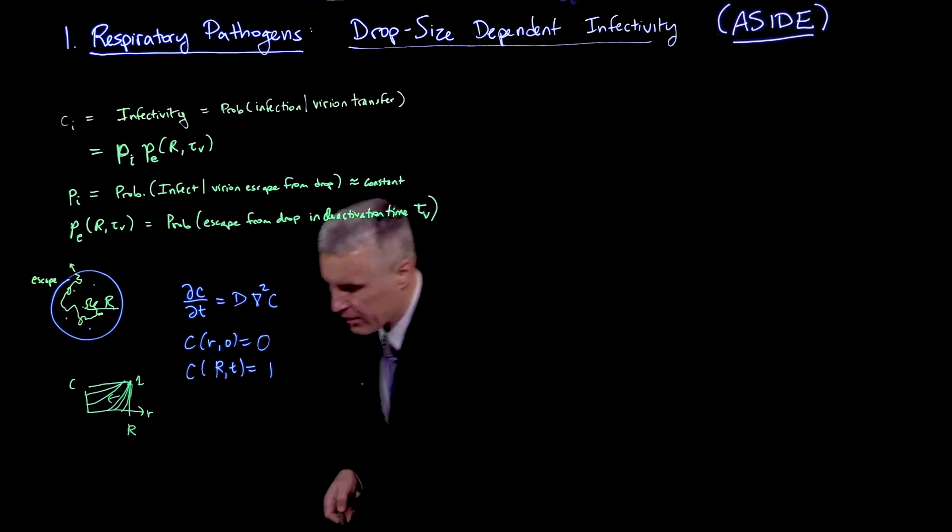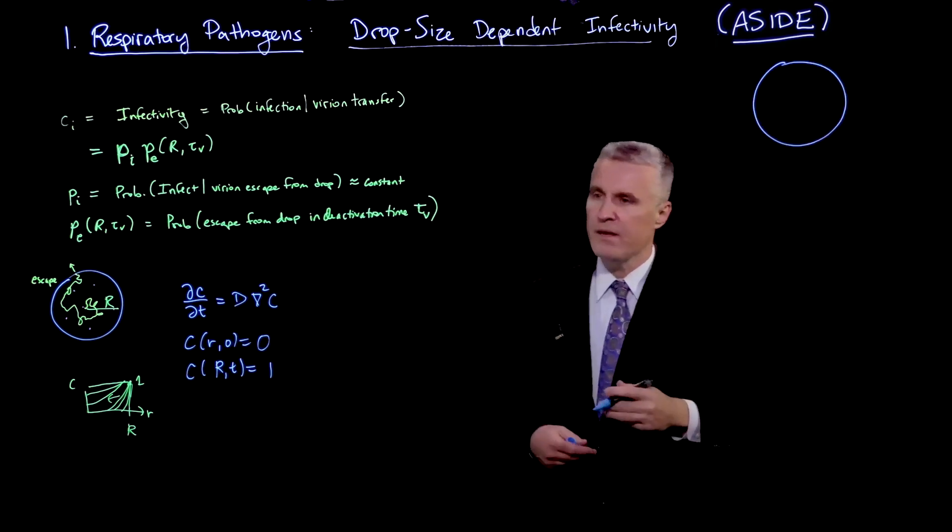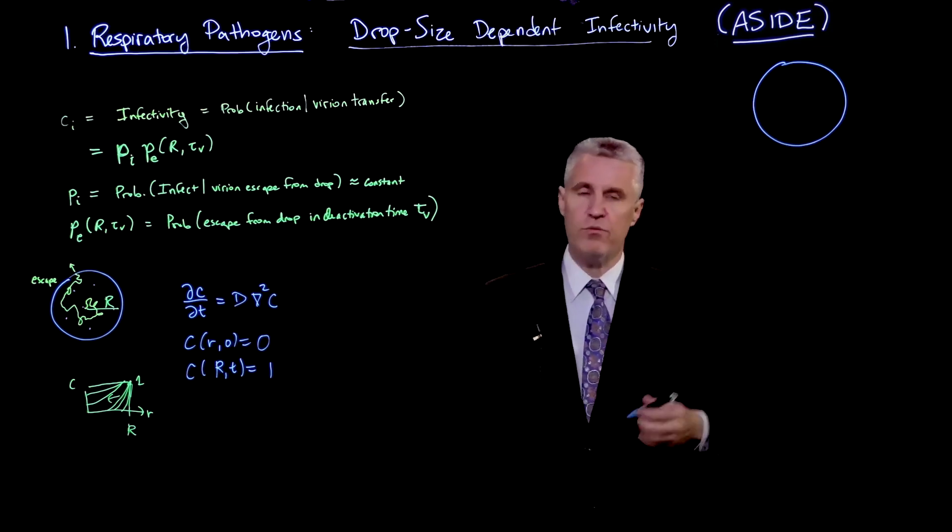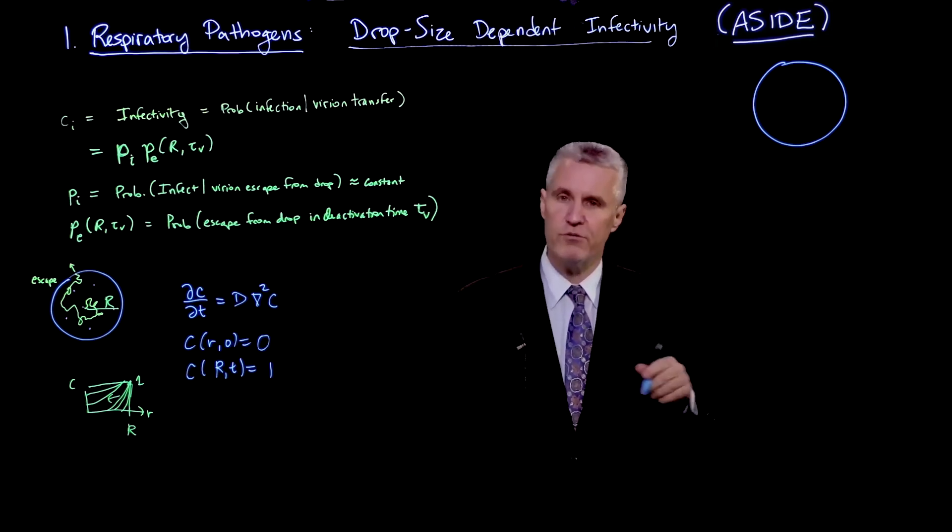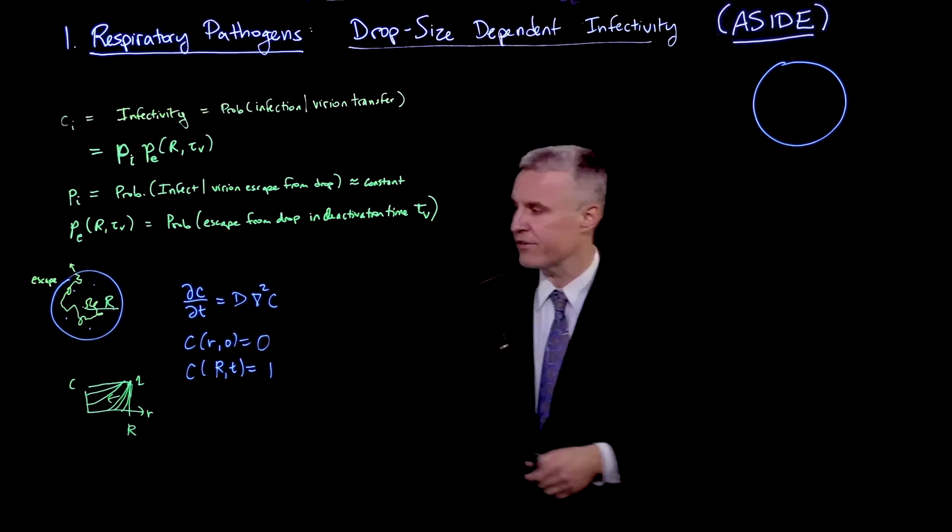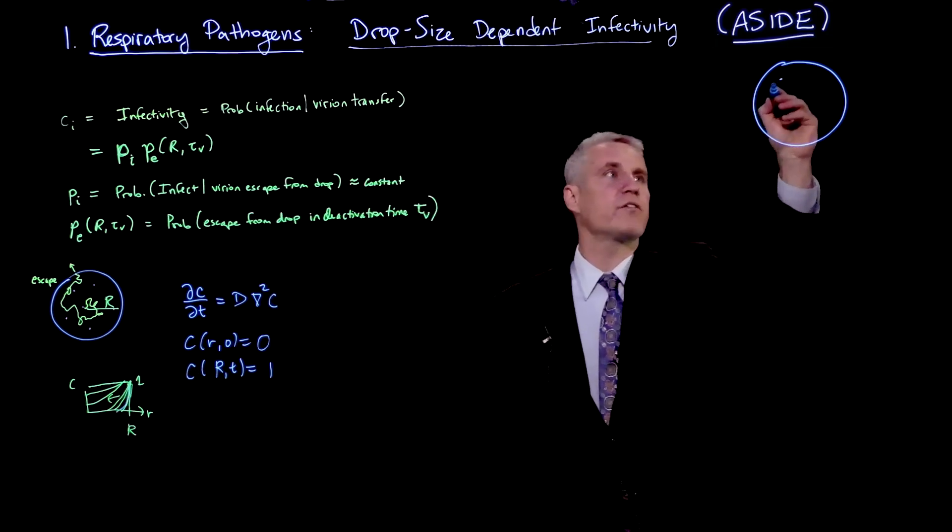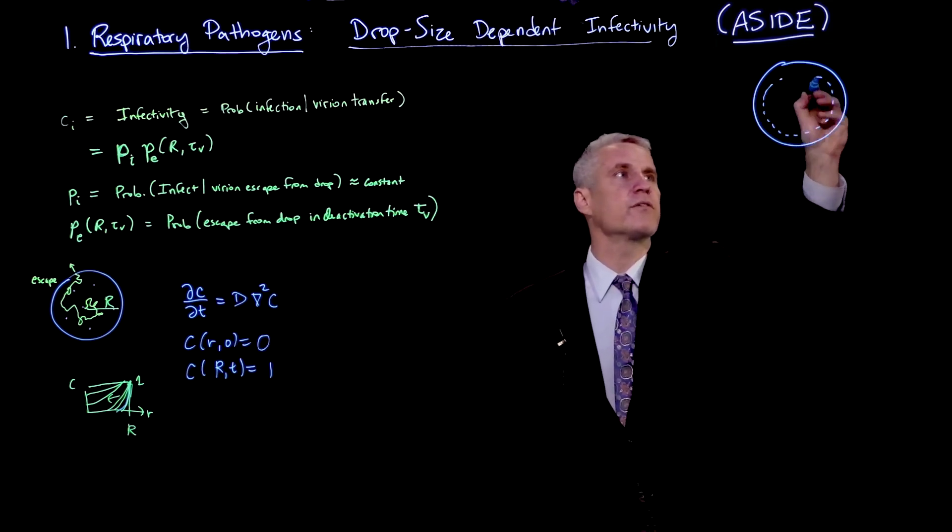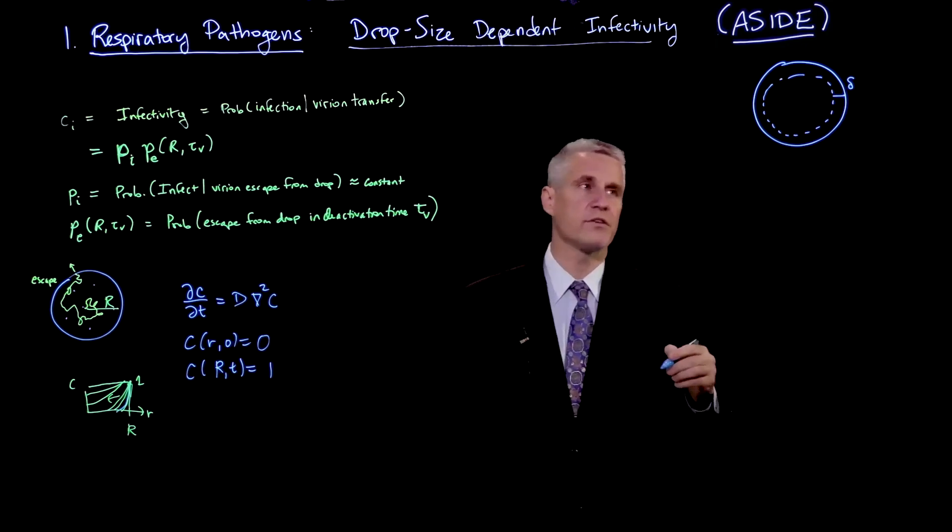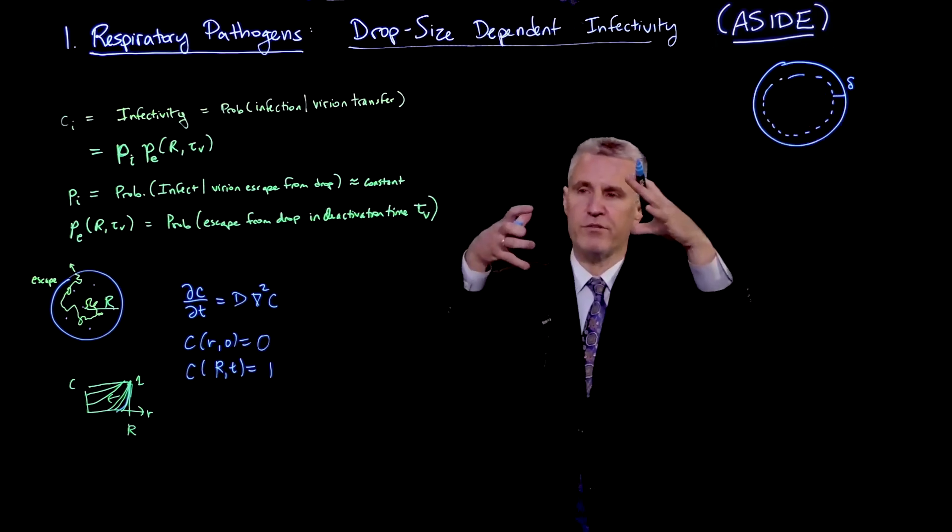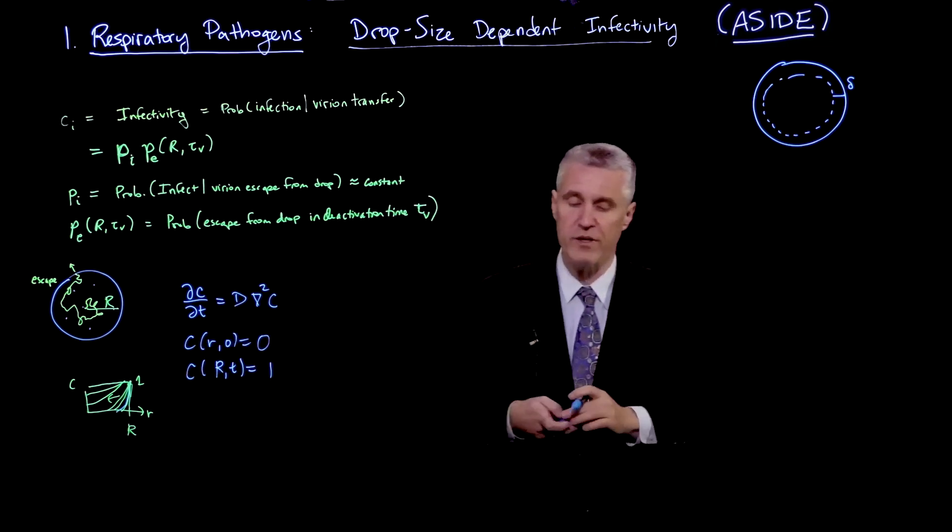So let me sketch the droplet again. At early times, when there hasn't been a chance for the virions to diffuse very far, then only those which are close to the boundary actually have a chance of leaving. This is the initial boundary layer that I sketched here. Let's give that a distance delta, which is the boundary layer thickness. This outer annulus is really where virions have had a chance to leave.